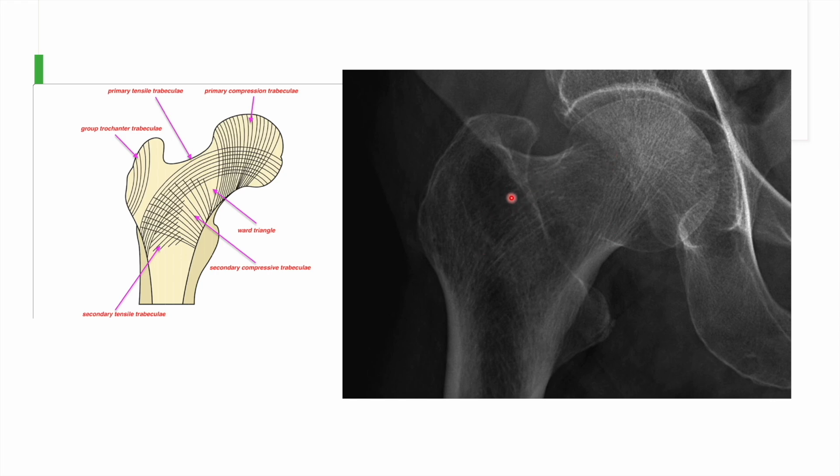Therefore we call the trabeculae on the lateral side the primary tensile trabeculae, while the trabeculae on the medial side are known as compression trabeculae, because of the forces acting on them.